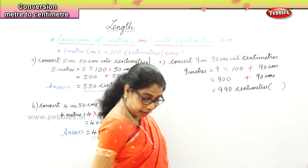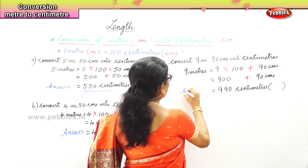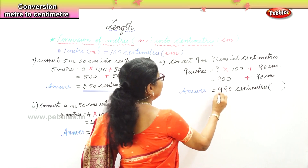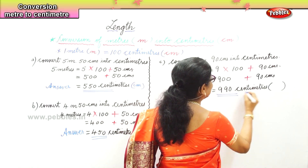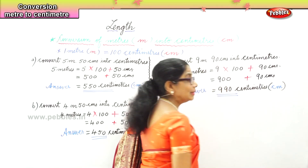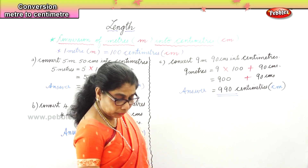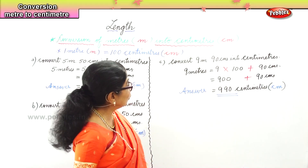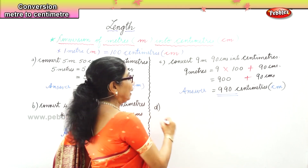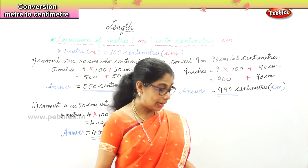That is our answer: 990 centimeters. The short form is cm. Let's work out one more sum to help us with conversion from meters to centimeters.